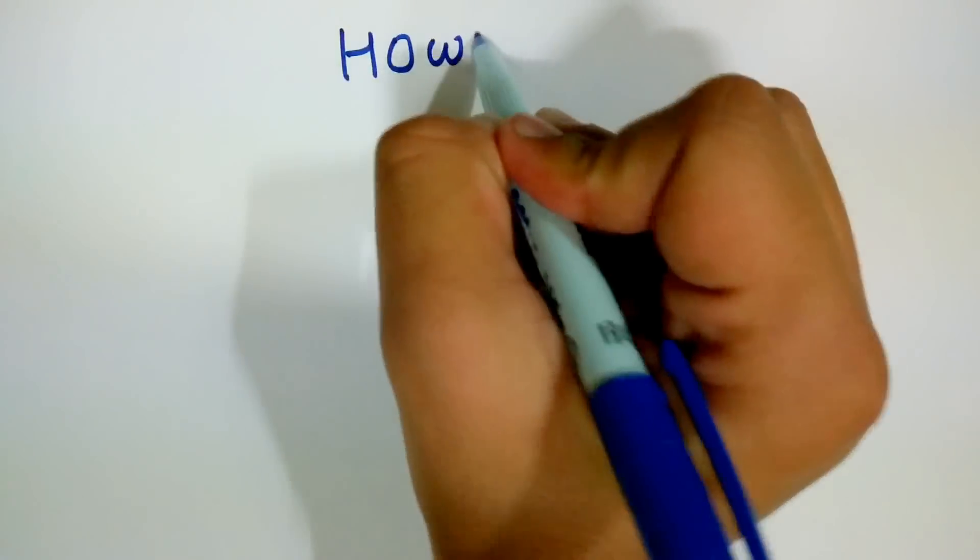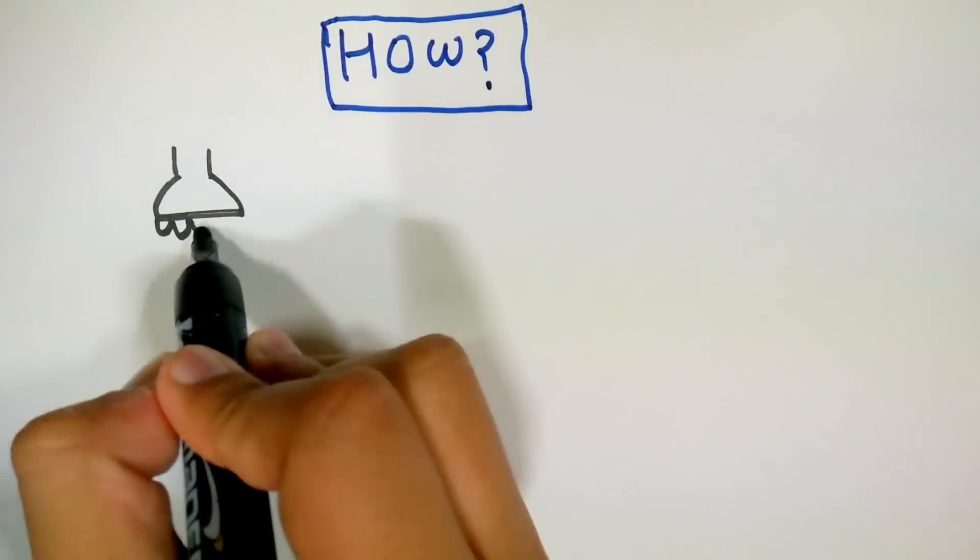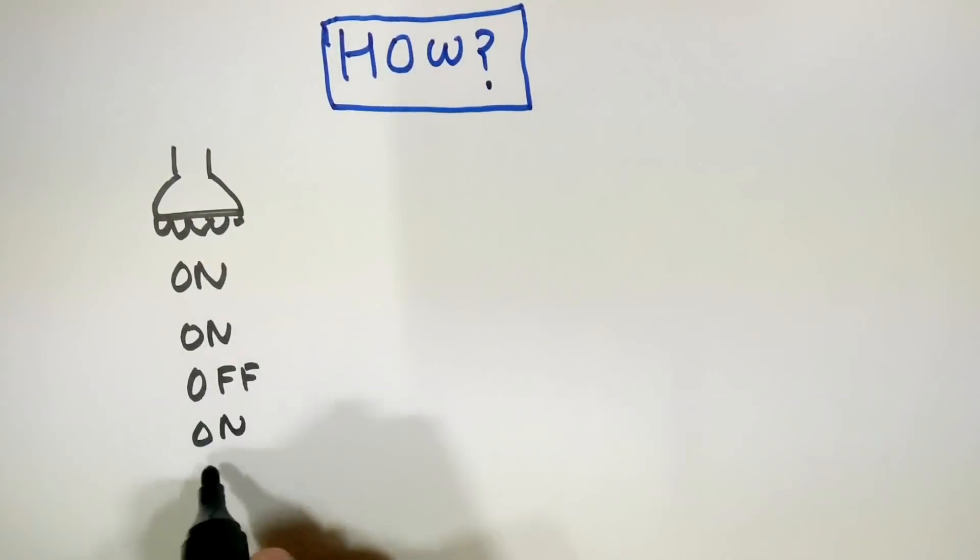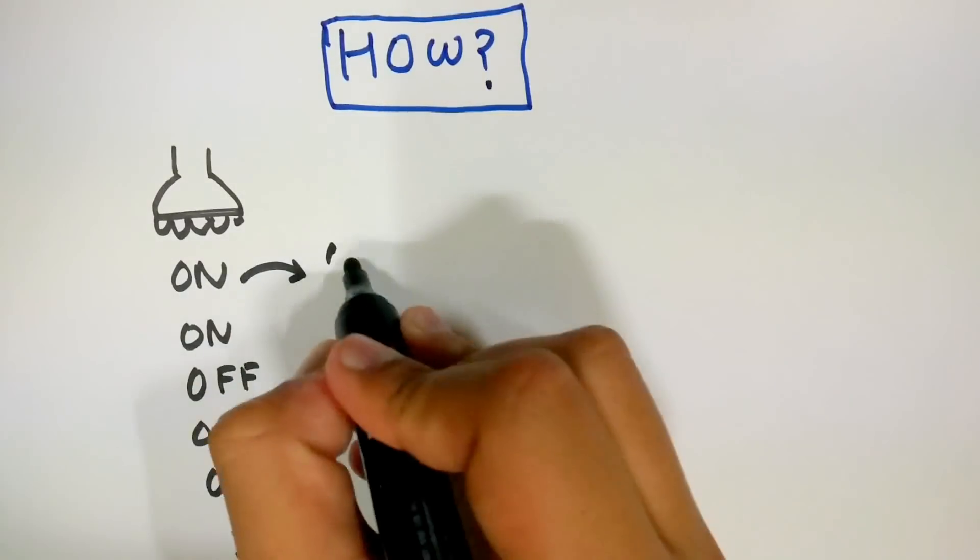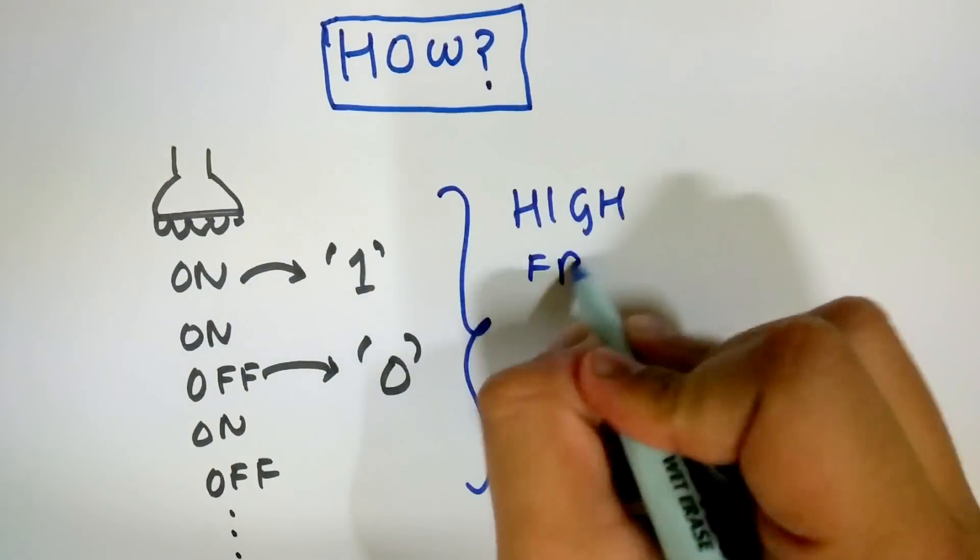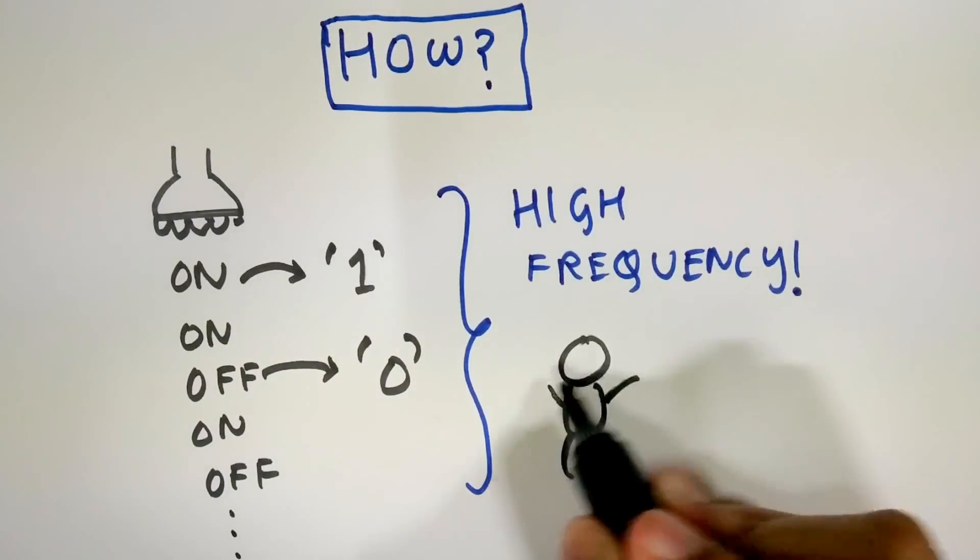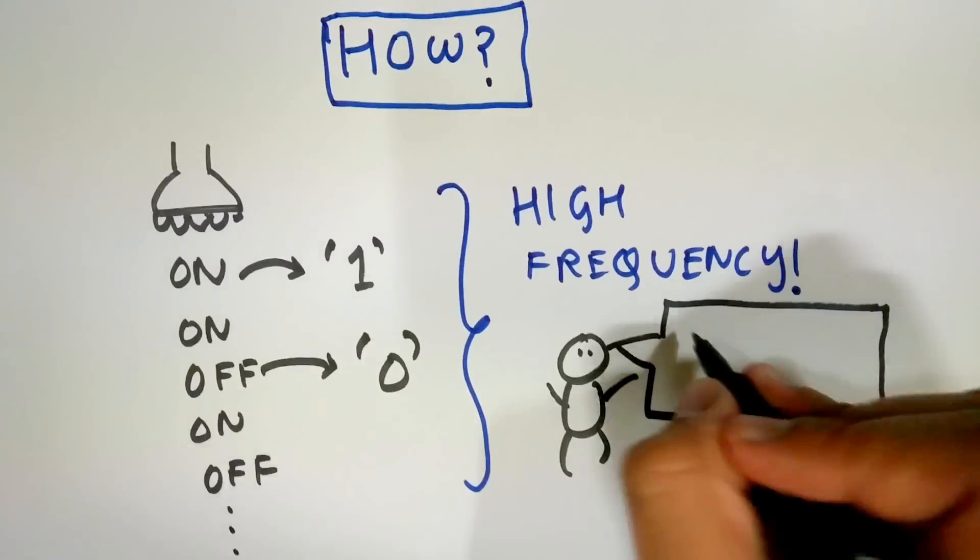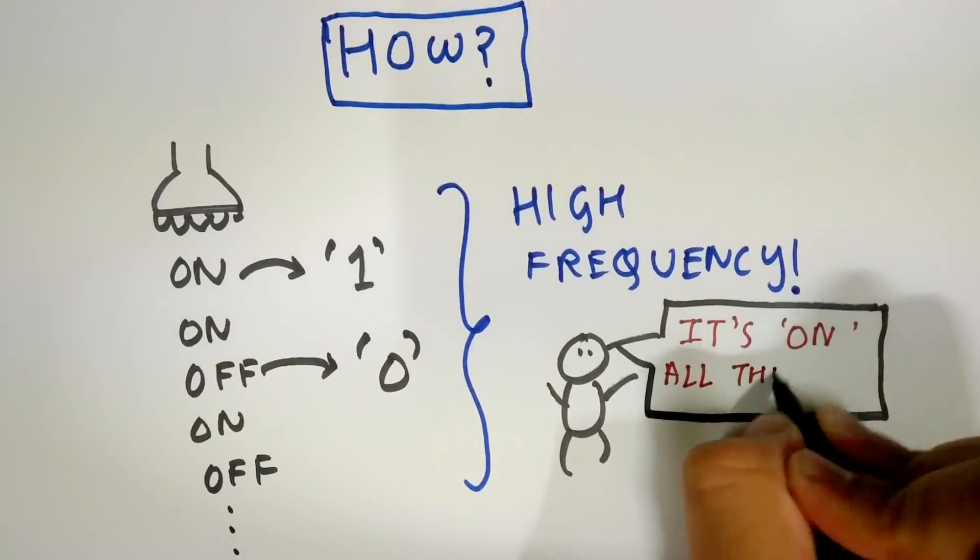But how does all this work? An LED bulb can be flickered on and off at a very high frequency where the on signifies a binary 1 and the off signifies a zero. The frequency of this on and off cycle is so high that the human eye cannot see the light changing in any way. For us, the light remains on all the time.